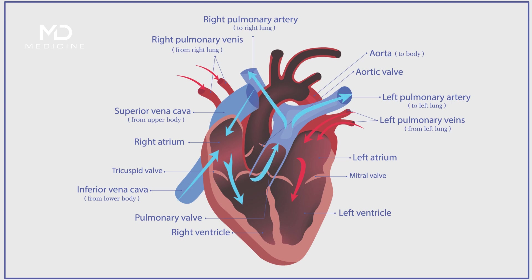The right ventricle pumps oxygen-deficient, deoxygenated blood to the lungs via the pulmonary artery, which is responsible for transporting the blood to the lungs for oxygenation. The left ventricle pumps oxygen-rich, oxygenated blood to the aorta and the rest of the body via the aortic valve. The aortic valve then opens to expel the oxygen-rich blood to the body.